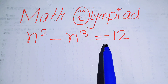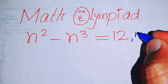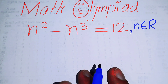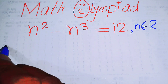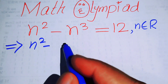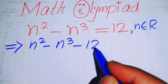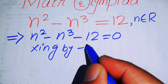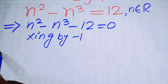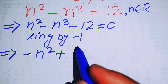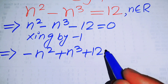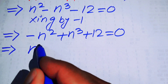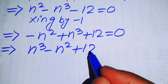We will solve this problem for the real values of n, so n belongs to ℝ. The very first thing we do is move 12 to the left-hand side to get n squared minus n cubed minus 12 equals 0. Now we multiply both sides by minus 1 to get minus n squared plus n cubed plus 12 equals 0.